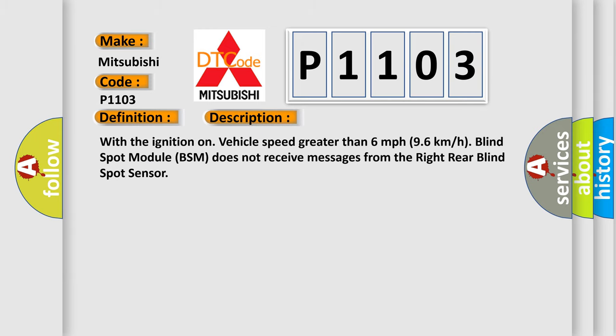Here is a short description of this DTC code: With the ignition on and vehicle speed greater than 6 mph (96 km/h), the blind spot module BSM does not receive messages from the right rear blind spot sensor.